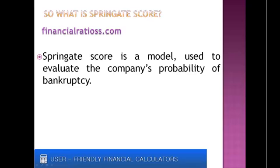So what is the Springate score? The Springate score is a model used to evaluate the company's probability of bankruptcy. It was created in 1978 by Gordon Springate, who continued developing the Altman model. In spite of that, the Springate score is still a less popular model for bankruptcy predictions than Altman's model.